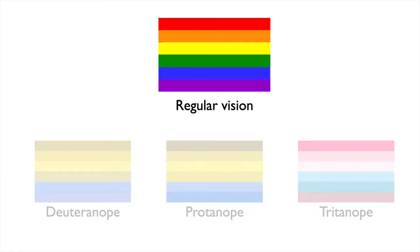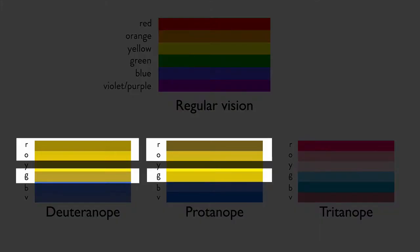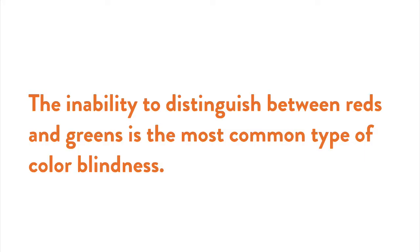On the screen is an example of how people with different types of colorblindness may see certain colors. On the top, a typical rainbow of red, orange, yellow, green, blue, and purple. Below it, three of the most common types of colorblindness and how a person with each type would see the same rainbow. As you can see in the first two examples, red looks like a dark olive green and orange and green both appear as similar shades of yellow-green. The inability to distinguish between reds and greens is the most common type of colorblindness.